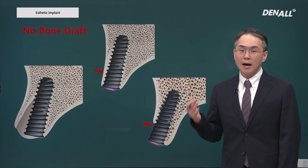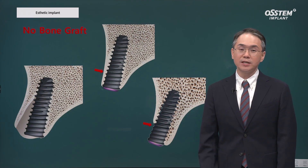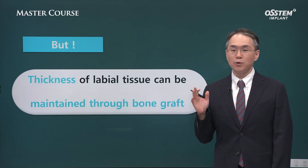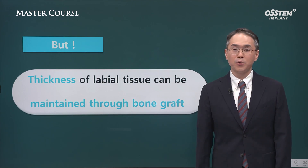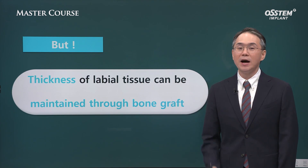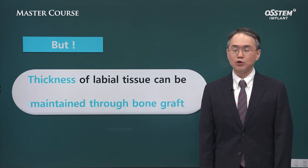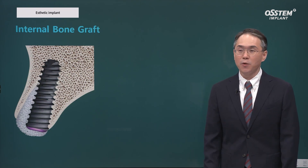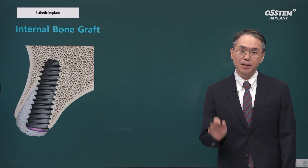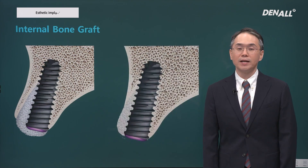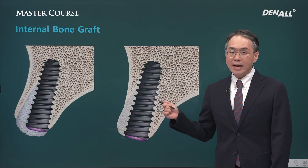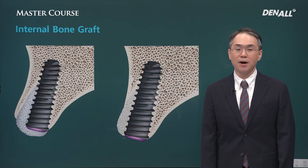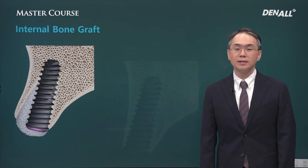If you do this, gingival recession can lead to a lengthened crown. But fortunately, by making sufficient space and placing the implant palatally, and by filling that gap with bone graft material, labial tissue thickness can be maintained. This is the strategy I use frequently. I try to place the implant as palatally as possible, making the gap between the labial plate and the implant more than 2 mm, and making sufficient space for graft material. Even then, the thin labial bone will be partially resorbed, but if the thickness of graft material compensates for it, new bone can be formed around the graft material.